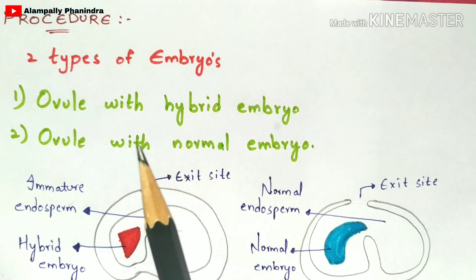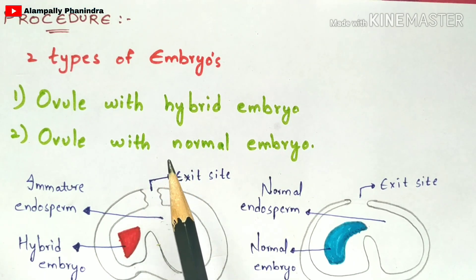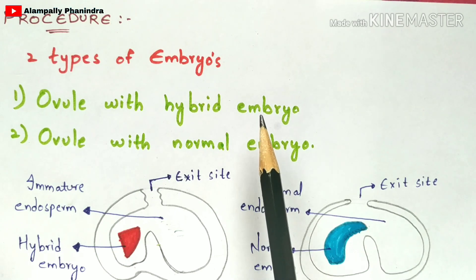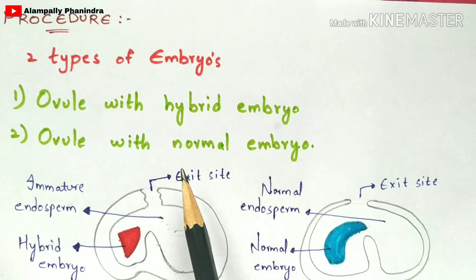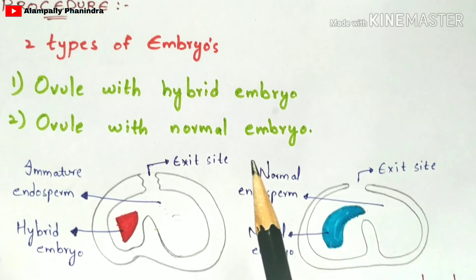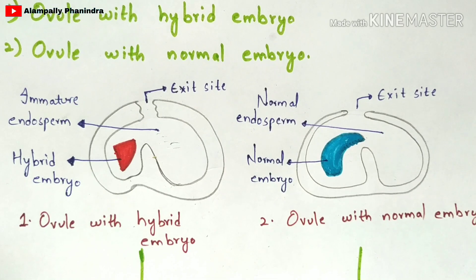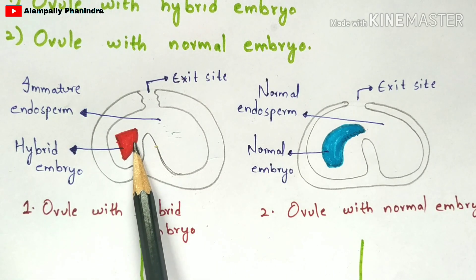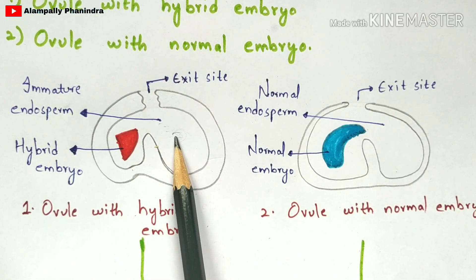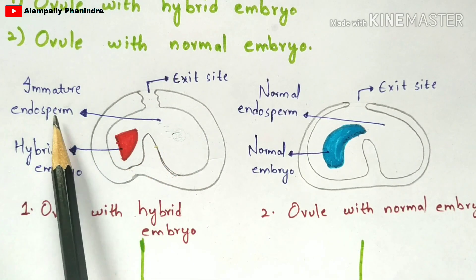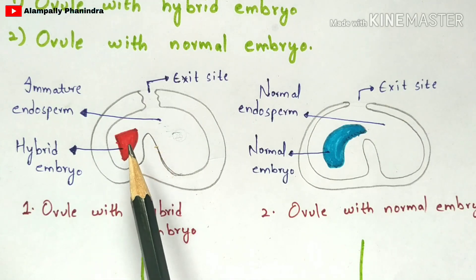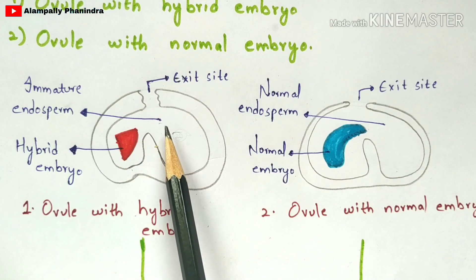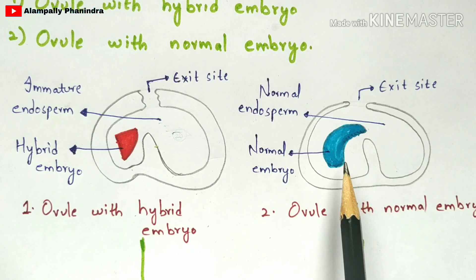In the procedure of embryo rescue, there are two types of ovules chosen. The first type is an ovule which consists of a hybrid embryo, and the second type is an ovule which consists of a normal embryo. As we know, an ovule consists of endosperm as well as an embryo. In the first case — ovule with hybrid embryo — there is a presence of immature endosperm.